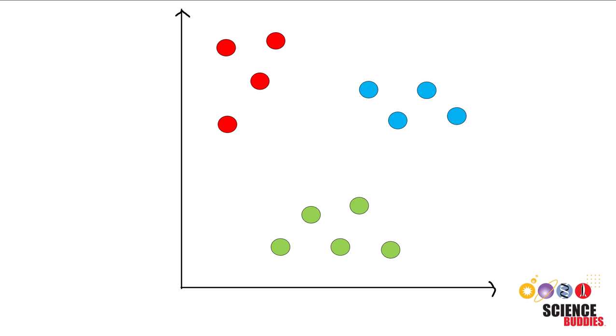First, you want to decide on how many clusters you want in your data. We'll start with k equals 3. Then, select three random data points. These are the initial clusters.